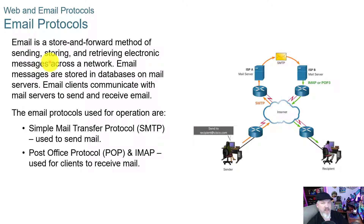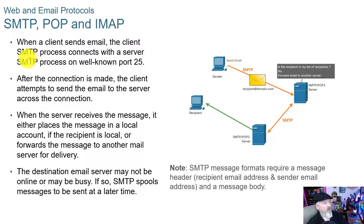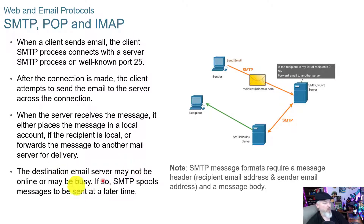Email is a store-and-forward method of sending, storing, and receiving electronic messages across the network. Email messages are stored in databases on mail servers, and email clients communicate with mail servers to send and receive mail. Email protocols used include SMTP, POP, and IMAP. SMTP — simple mail transfer protocol — is used to send mail. When a client sends email, the SMTP process connects with the server SMTP process on well-known port 25. When the server receives the message, it either places it in a local account if the recipient is local, or forwards it to another mail server for delivery.